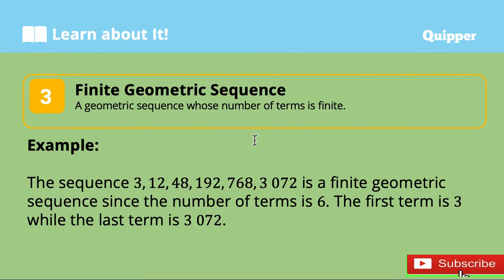A finite geometric sequence is a geometric sequence whose number of terms is finite. When you say finite, it is countable, or we can count the number of terms. For example, the sequence 3, 12, 48, 192, 768, 3072 is a finite geometric sequence since the number of terms is 6. The first term is 3, while the last term is 3,072. So we can consider a sequence geometric if there is a last term, or if we can identify the last term.